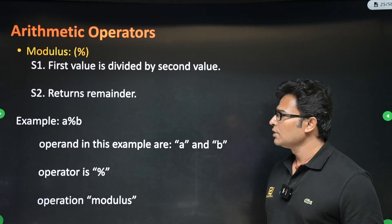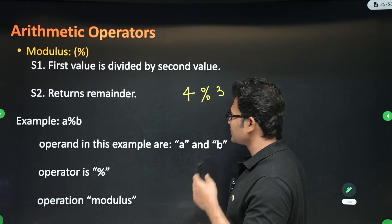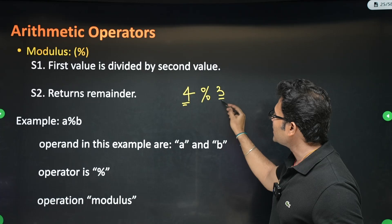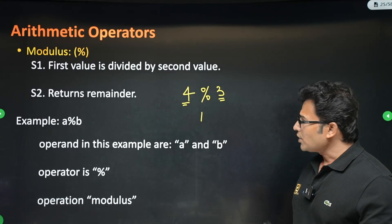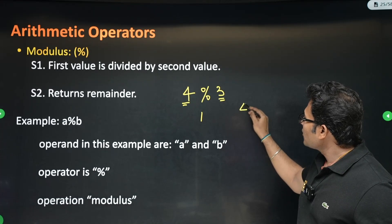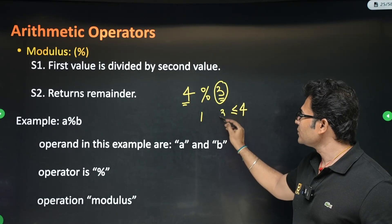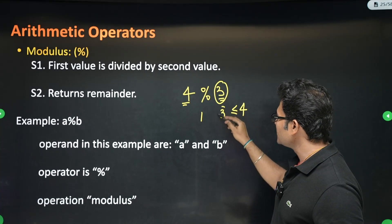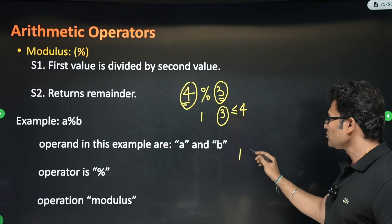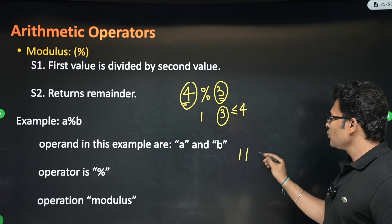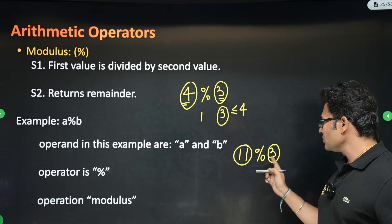Modulus is very important, especially for interviews. The modulus operator — for example 4 mod 3 — gives the remainder when you divide 4 by 3, which is 1. Another way: find the largest number less than or equal to 4 that is a multiple of 3, which is 3, then 4 minus 3 equals 1. Similarly, 11 modulo 3: the remainder when dividing 11 by 3.